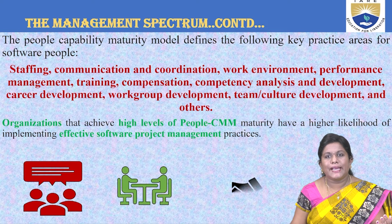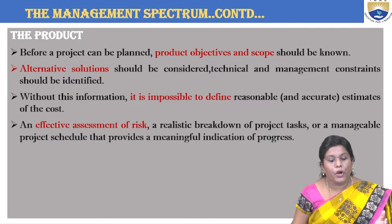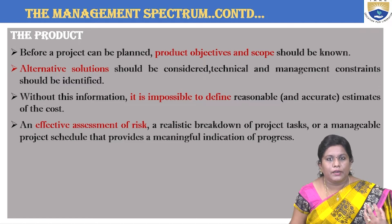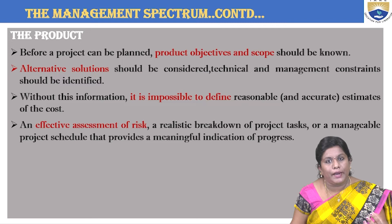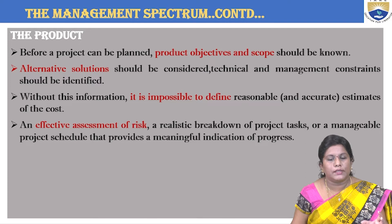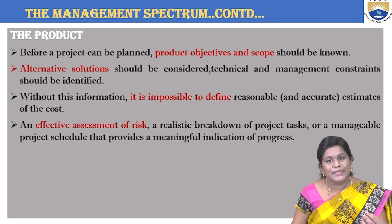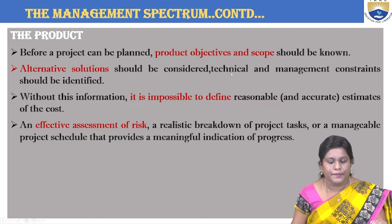Moving to the product — it is a deliverable product. Before a project or product can be planned, you first have to define your goals: what you want to achieve, what the objectives are, and what the scope of that particular project is. You should also have some alternative solutions — general features, technical features, or management-related features — all of which have to be identified.